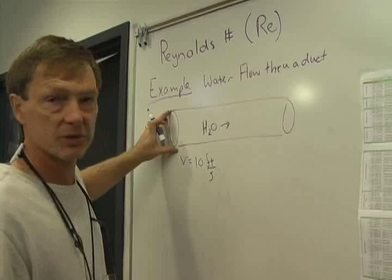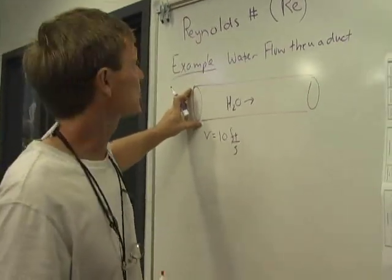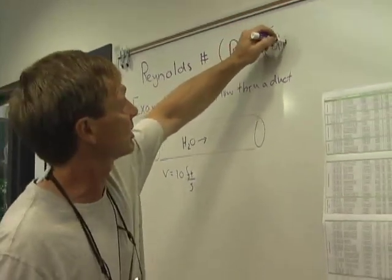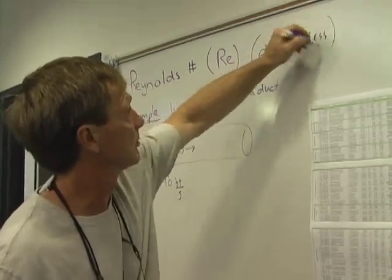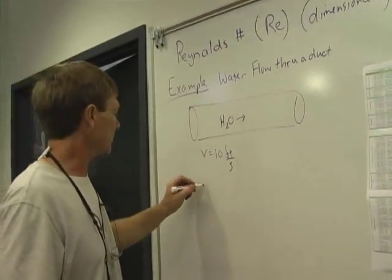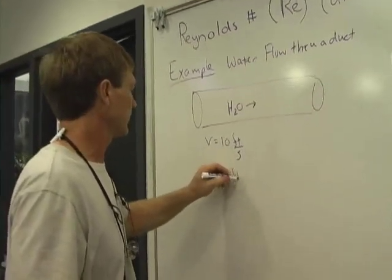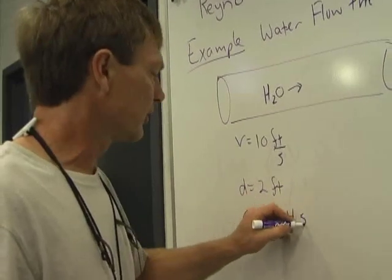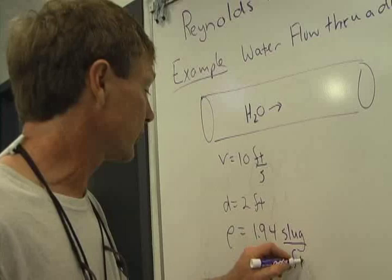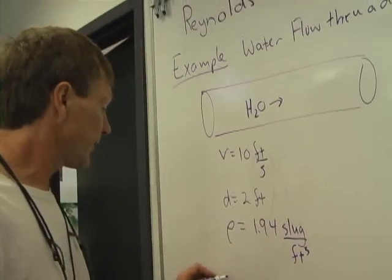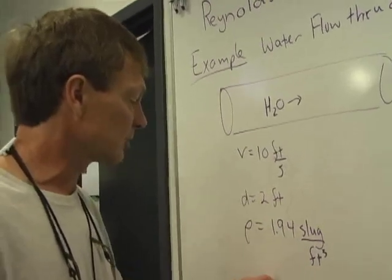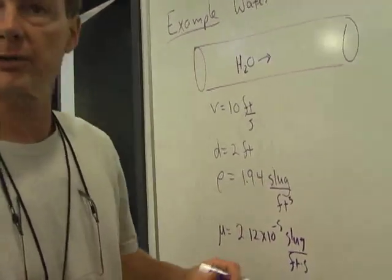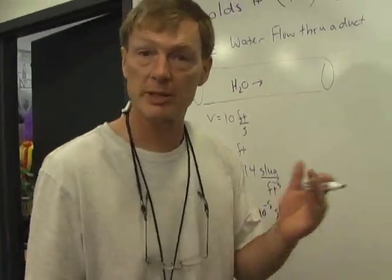If it was in inches, I'd have to convert it to feet because the Reynolds number has no units. It's dimensionless. So I've got 10 feet, a 2 foot diameter. And for water, I believe the density of water is about 1.94 slugs per cubic foot. I'm not doing weight density, I'm doing mass density. And the viscosity of water is something like 2.12 times 10 to the minus 5 slugs per foot per second. So we'll make sure that we calculate the Reynolds number, we'll see what it means, we'll make sure the units cancel.